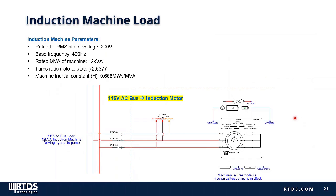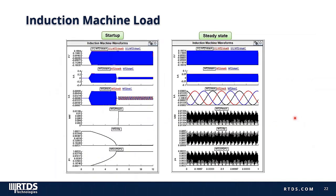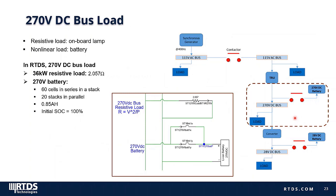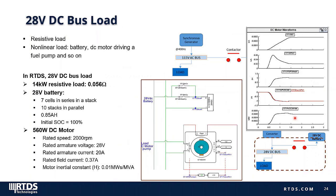There is also an induction machine load directly connected to the main AC bus, rated at 12 kVA. Simulation results show that the induction machine operates successfully at around 1 per unit speed in steady state. For the 270 V DC bus, a resistive load is considered for onboard lamps, along with battery support — the initial SOC of the battery is set to 100%. For the 28 V DC bus, a resistive load, battery support, and a DC motor are considered, the DC motor generally used to drive a fuel pump.